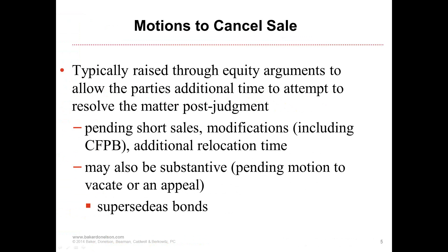The objection to sale needs to be based on either inadequate notice or a grossly inadequate bid price. There has been an amendment based on the 2013 Supreme Court case Arsali v. Chase Home Finance. That case dealt with a situation where both parties were attempting to cancel a sale to work on a modification. The court denied it, it went to sale, a third party purchased it, and the court later held the sale was invalid — that the court should have granted the motion to cancel the sale, and that the third party purchaser was essentially out of luck because both plaintiff and defendant had sought to cancel the sale.